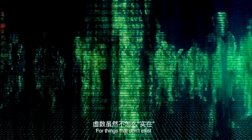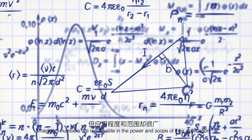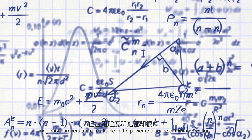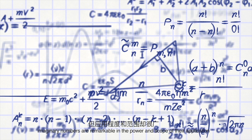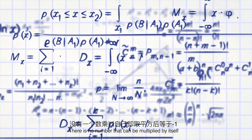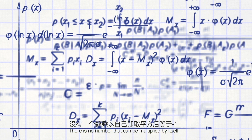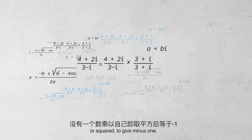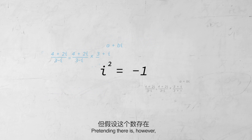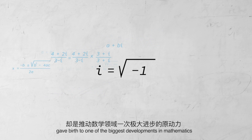For things that don't exist, imaginary numbers are remarkable in the power and scope of their application. There is no number that can be multiplied by itself, or squared, to give minus one. Pretending there is, however, gave birth to one of the biggest developments in mathematics.